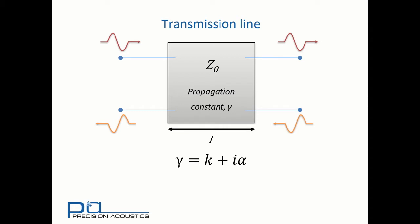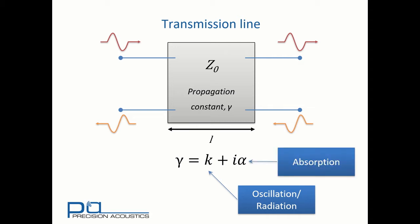Our propagation constant is a complex valued quantity. The real part of this, the wave number K, is associated with oscillation and radiation of the wave. And the imaginary component, alpha, deals with absorption.